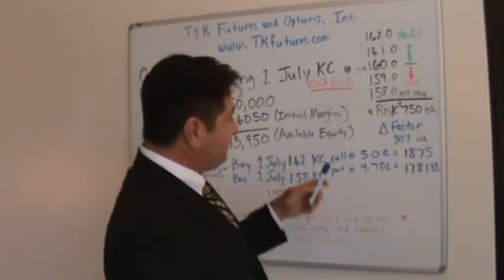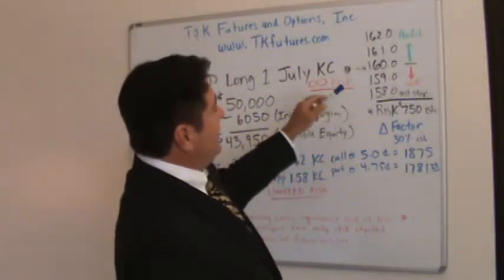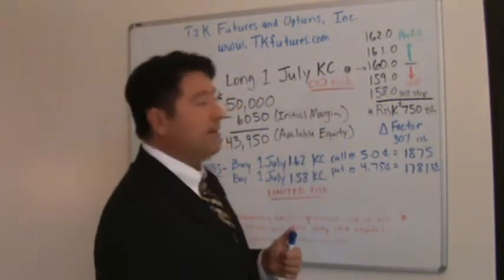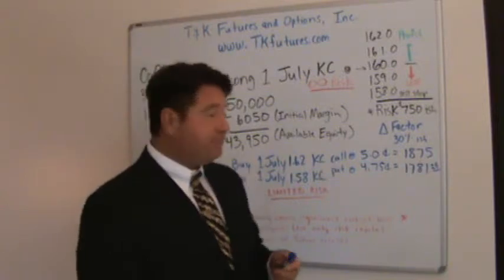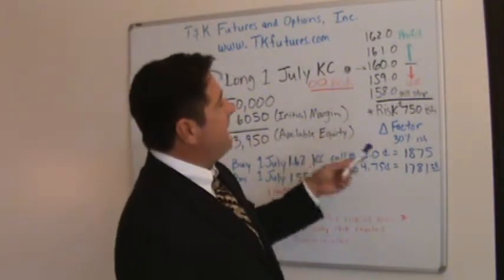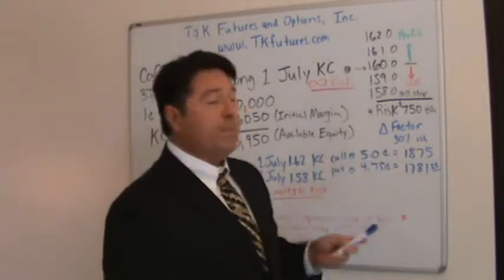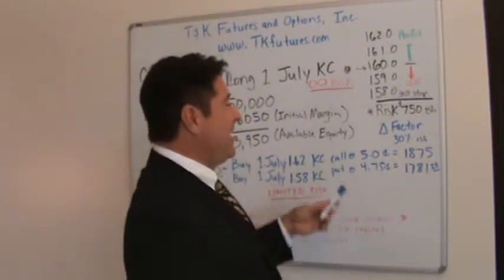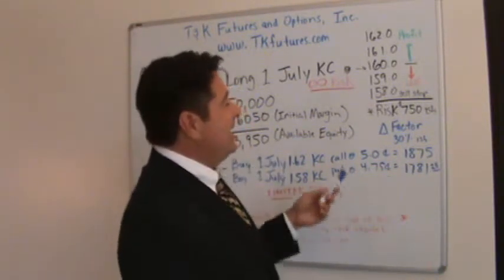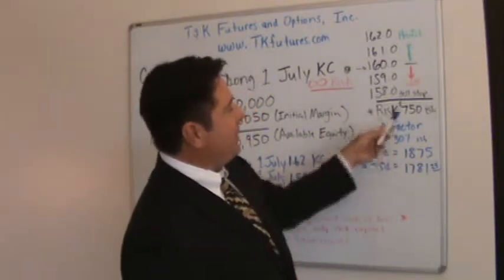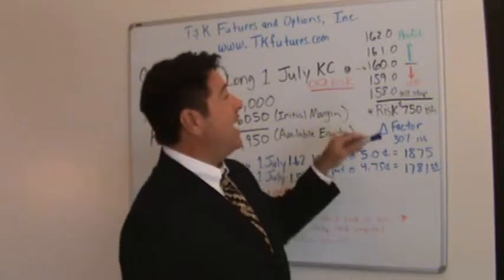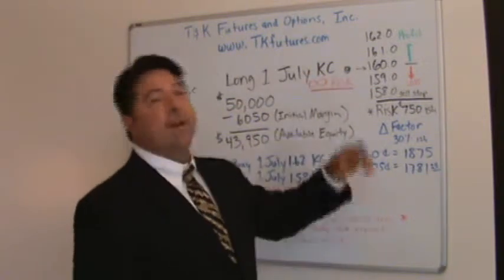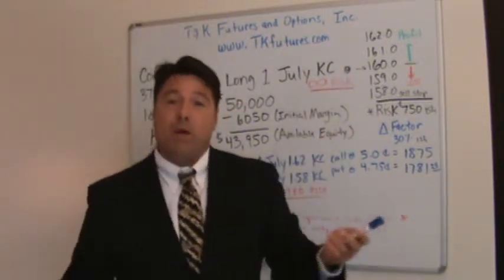Let me give you a hypothetical example of making or losing money. Let's say the market goes from 160 up to 162 — that's a $750 move to the upside. If you have a 30% Delta factor, your option is going to catch about 30% of that move, so roughly 30% of $750. You're not going to catch the entire $750, and that changes as the market changes — the Delta factor constantly moves up and down based on what the market itself is doing.